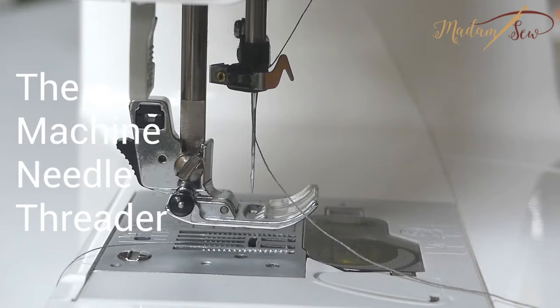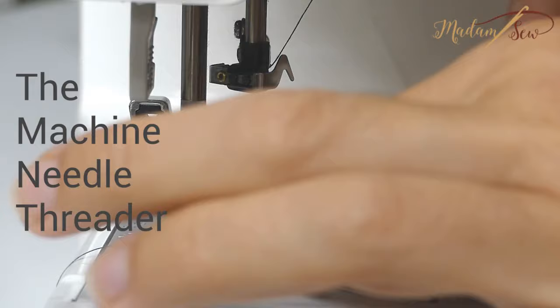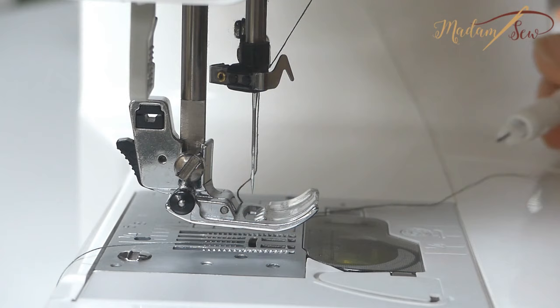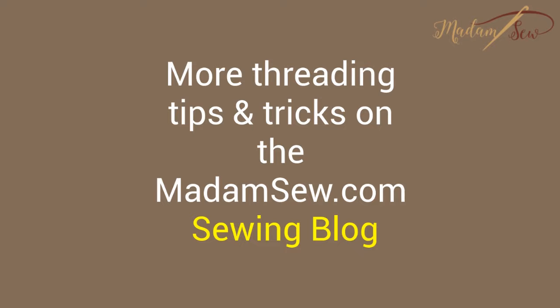If your machine doesn't have this, there's a tool and we have it in our store. This tool pushes a loop through the eye of the needle, and with a little hook you can grab that loop very easily. This works for all sewing machines and all serger needles.